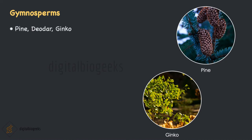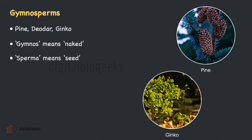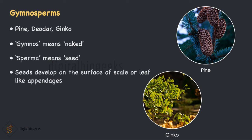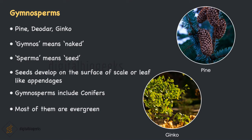Let's learn about gymnosperms. Examples are pines, cycads and Ginkgo. The word comes from two Greek words: gymnos means naked and sperma means seed — that means naked seed. The seeds of gymnosperms develop either on the surface of a scale or leaf-like appendages of a cone. In pine, these cones bear seeds; one cone produces two seeds beneath each scale. These seeds remain in the cone until it dries out. Gymnosperms include conifers, which are woody plants and mostly trees. Most of them are evergreen, meaning they stay green year-round.